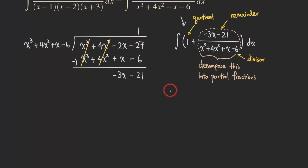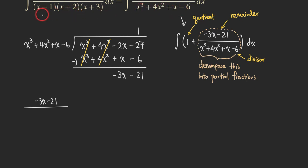We are going to write this fraction: negative 3x minus 21 in the numerator, and the denominator. Instead of writing the expanded form, we can write it in factor form because that's already given. The factor form of this expression is x minus 1, x plus 2, x plus 3. So we have x minus 1, x plus 2, and x plus 3 in the denominator.